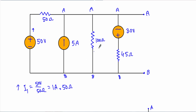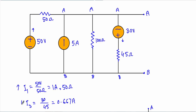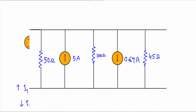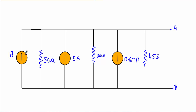I am using the source transformation technique. For the 30 volt source, denoted as V3, I will get current I3 equal to 30 divided by 45, which equals 0.667 ampere. This will supply current in this direction, so I3 will be in this direction, and with I3 I will connect a resistance of 45 ohm in parallel. Our circuit will now look like this after replacing the voltage sources with current sources and parallel resistances.